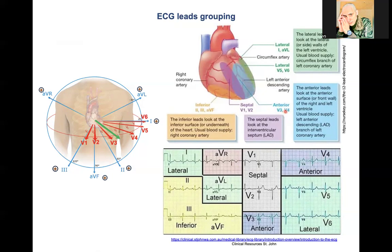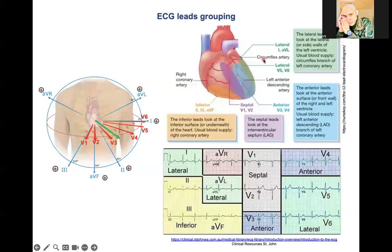Finally, we have the lateral leads: V5, V6, Lead 1, and AVL. The lateral leads look at the lateral walls of the left ventricle. The usual blood supply is the circumflex branch of the left coronary artery. Any pathologies in this region are best seen in leads V5, V6, Lead 1, and AVL.